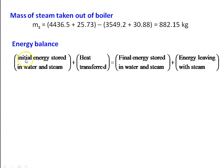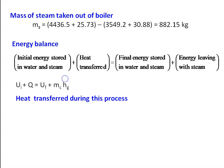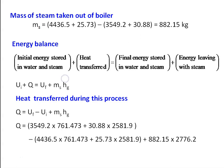Writing the energy balance: initial energy stored in the water and steam plus heat transfer equals final energy stored in water and steam plus energy leaving with the steam. We assume the steam leaves as dry saturated steam. So Q equal to Uf minus Ui plus Ms into Hg. Initial internal energy Ui: mass of water into specific internal energy of water plus mass of vapour into specific internal energy of vapour equals 4436.5 into 761.473 plus 25.73 into 2581.9. Final internal energy Uf equals 3549.2 into 761.473 plus 30.88 into 2581.9. Energy leaving with steam: 882.15 into Hg equal to 2776.2.